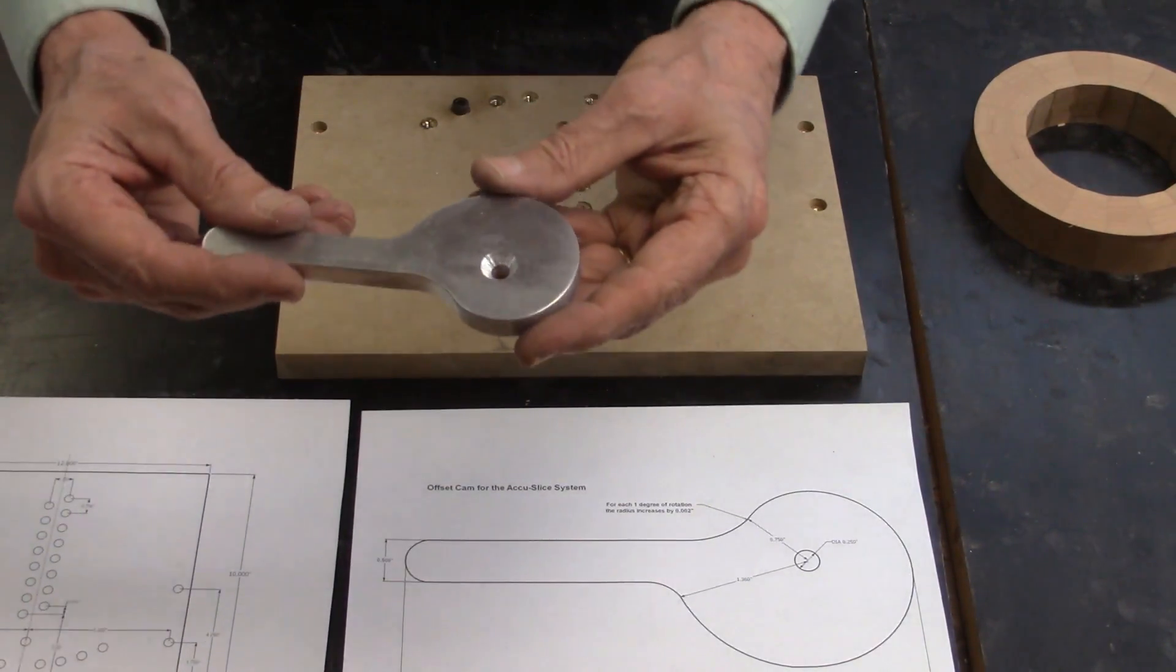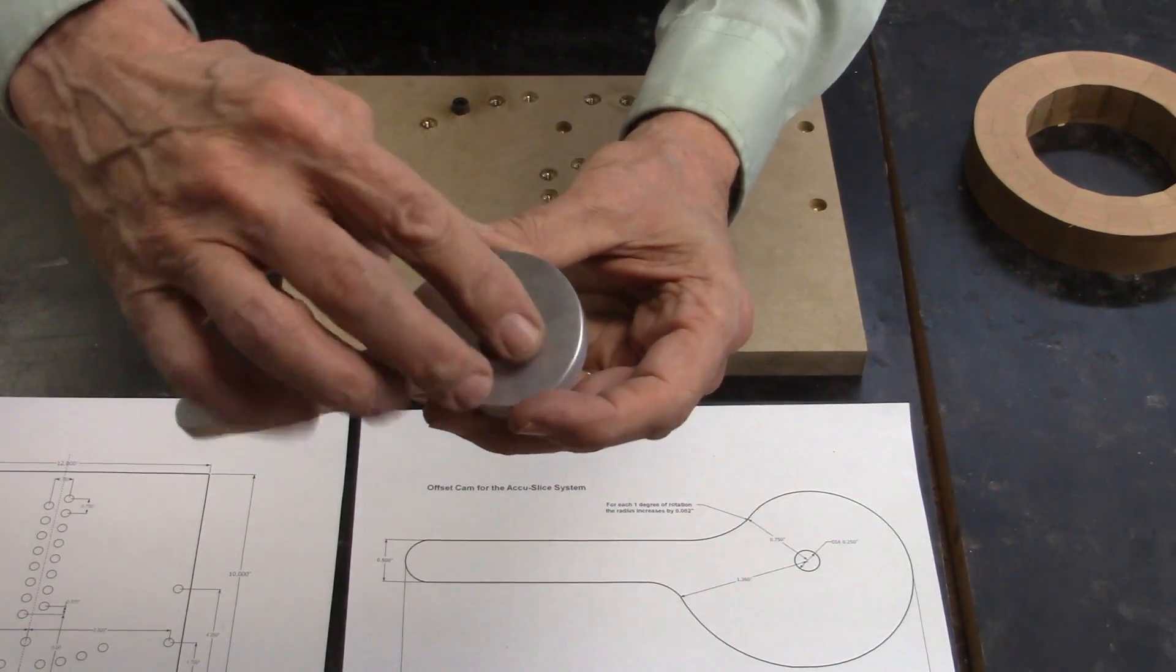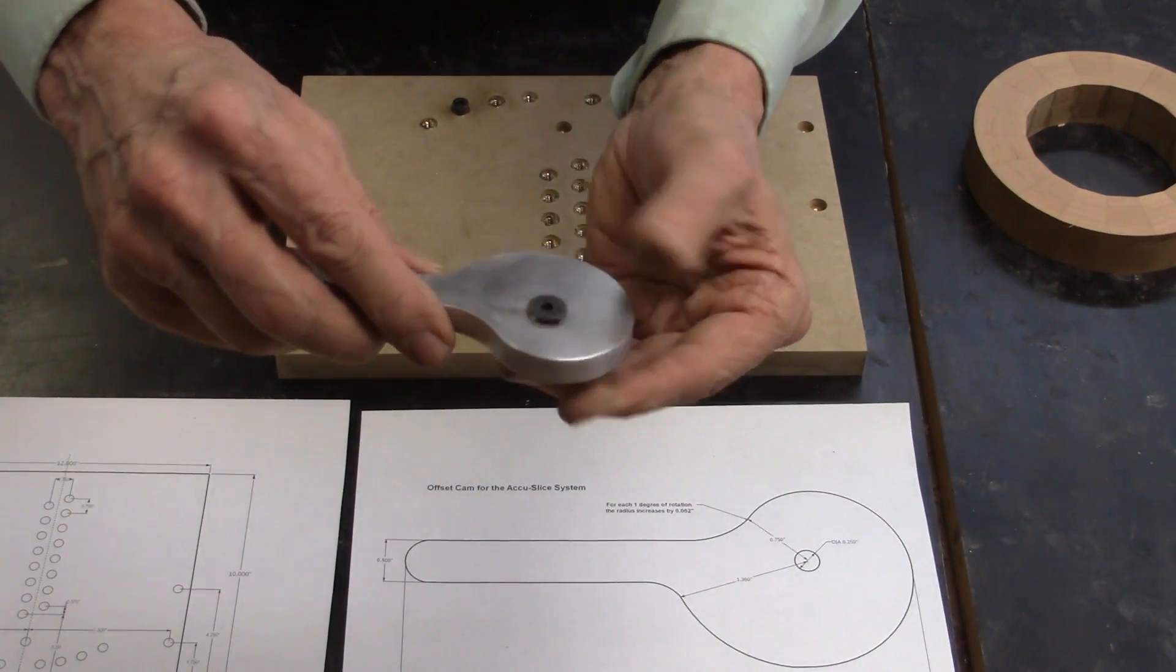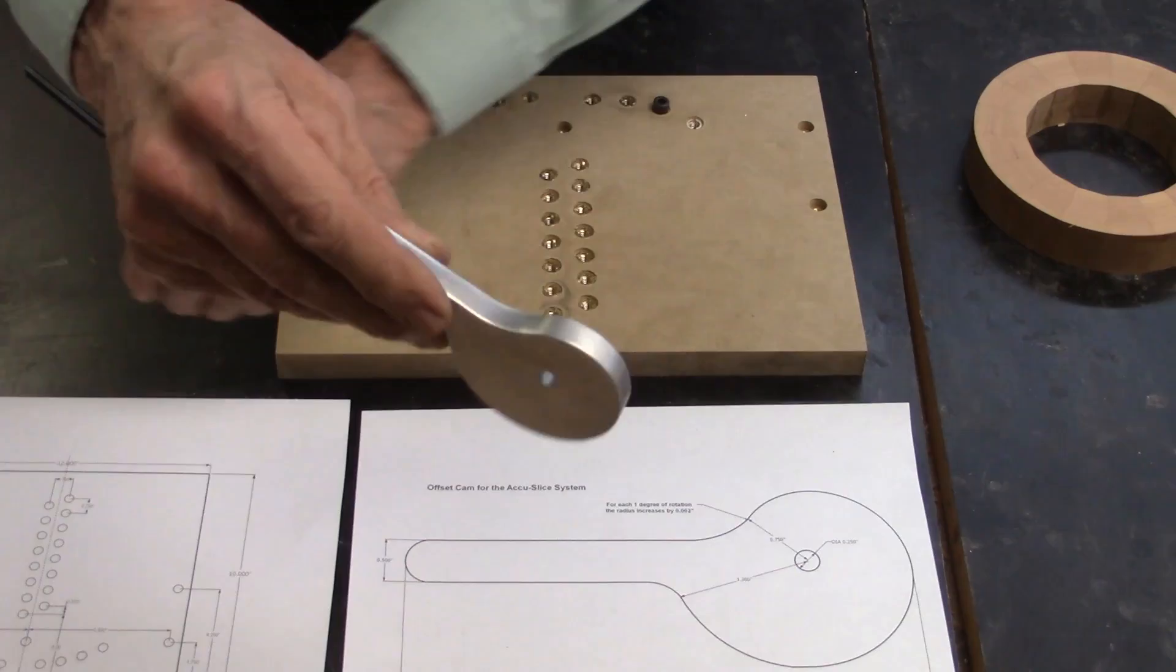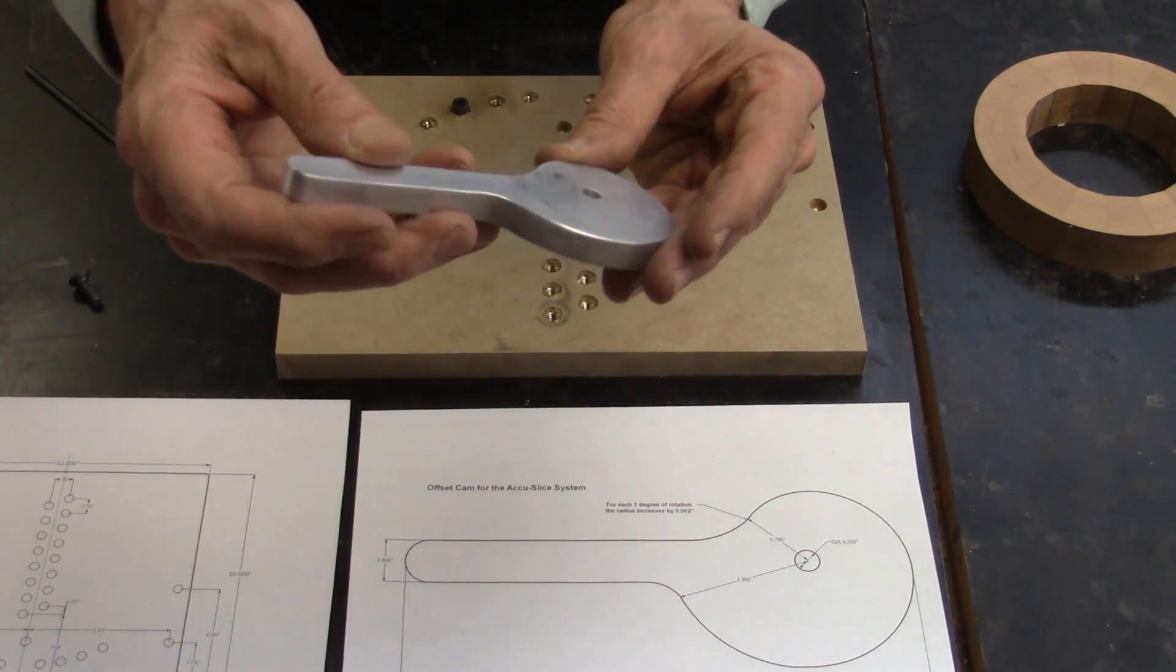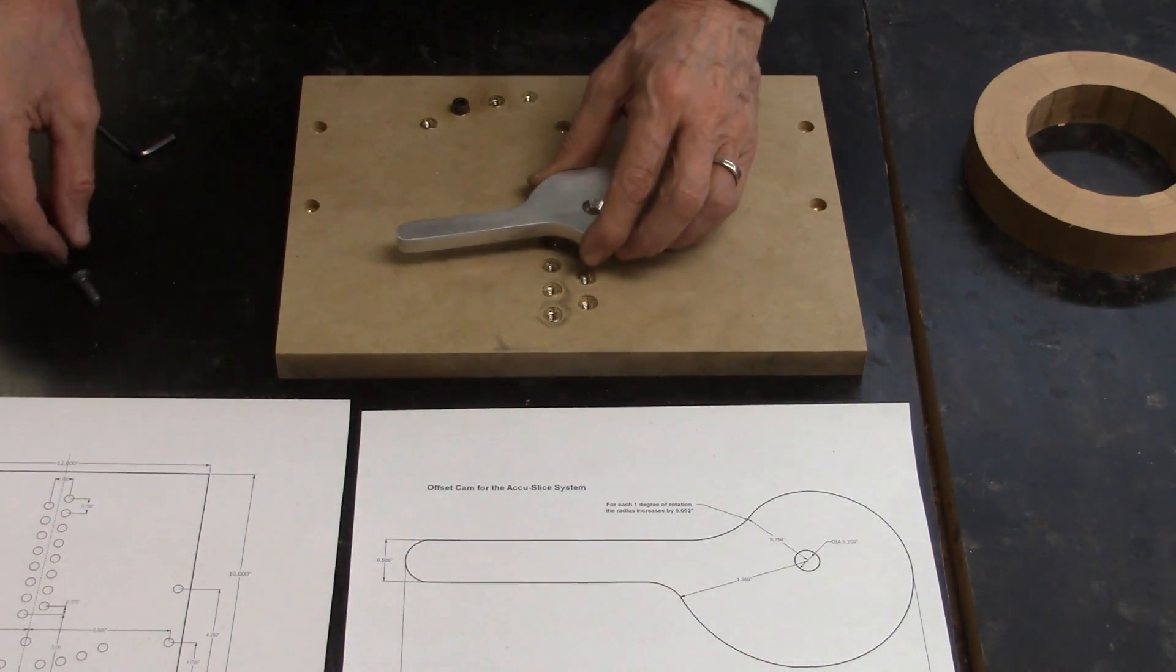Well, that finishes the offset cam. I just countersunk the hole so a screw fits flush so it doesn't have a lot of surface sticking up. This took quite a bit of work since I didn't have the right tool and did most of it by hand. So there's a lot of filing, a lot of sanding. But it came out pretty good.